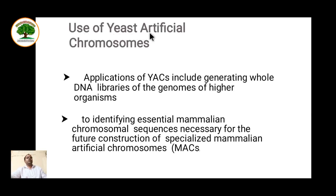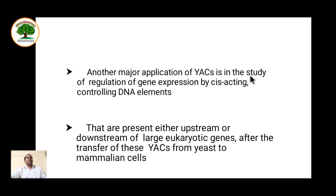YAC is used in generating whole DNA libraries of genomes of higher organisms. In the human genome project, different libraries of the whole human genome were prepared using YAC vectors. It is also helpful in identifying essential mammalian chromosome sequences necessary for future construction of specialized mammalian artificial chromosomes. Another major application is in the study of regulation of gene expression by cis-acting controlling elements of DNA — present either upstream or downstream of large eukaryotic genes — after the transfer of these YACs from yeast to mammalian cells.